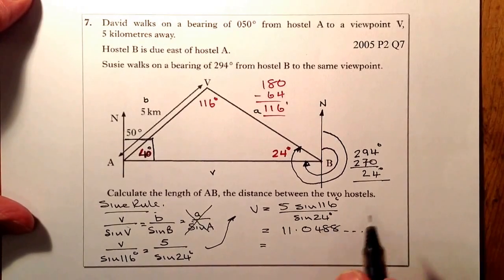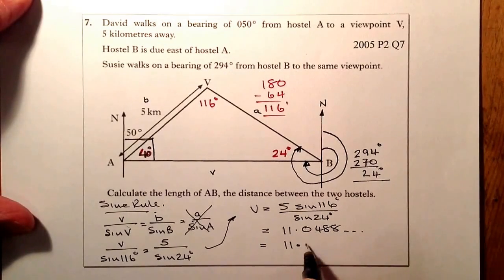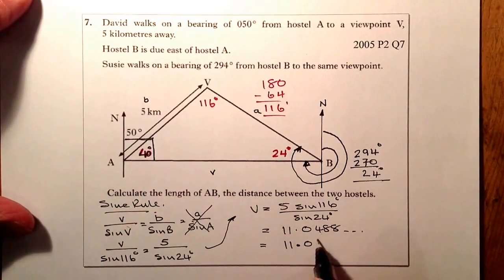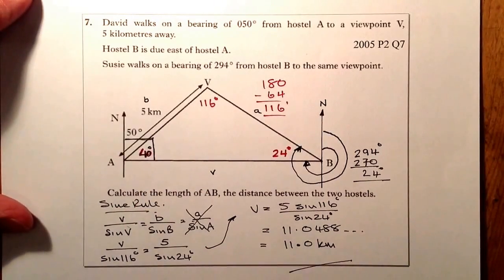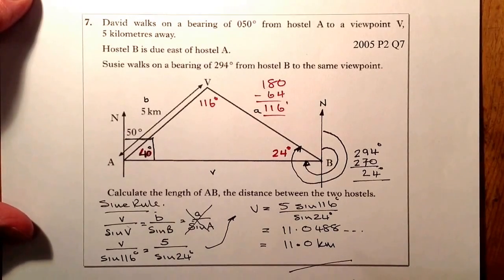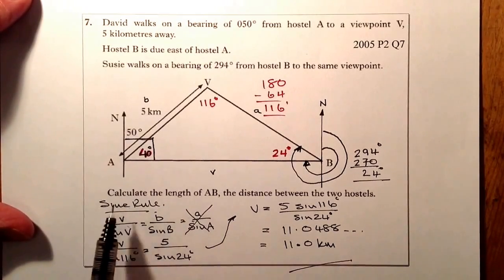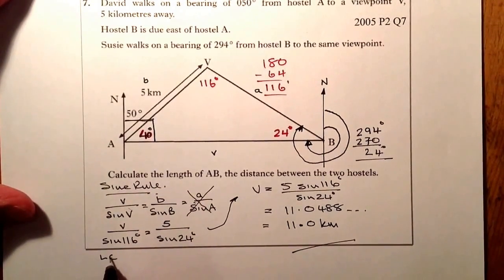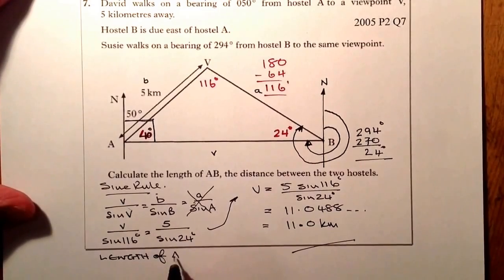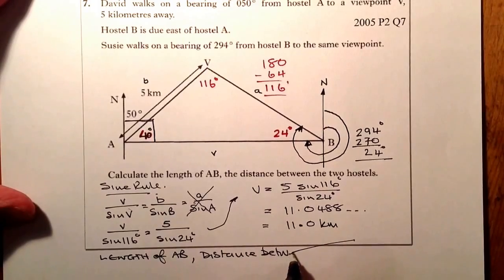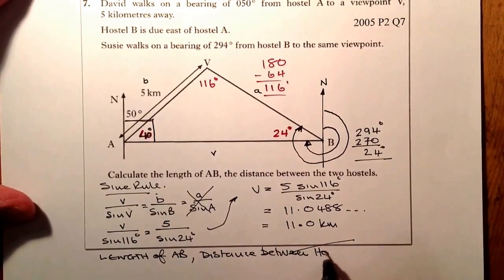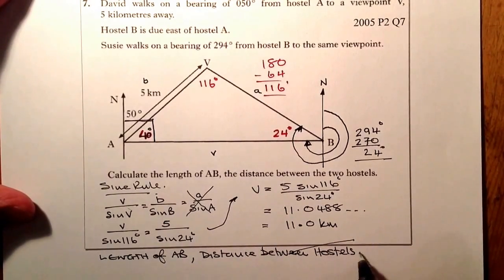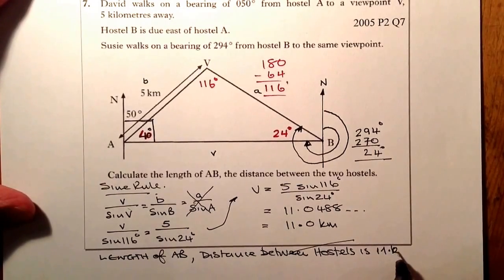And what I'm going to do is I'm just going to round it to one decimal place, so that's going to be 11.0, and we're working in kilometres. That would be the question complete. So maybe just make a statement at the end, that the length of AB, remember that's the distance between hostels, is 11.0 kilometres, and that would be it.